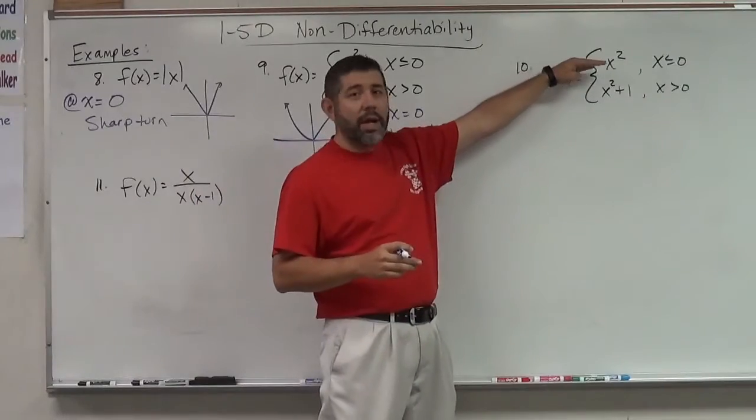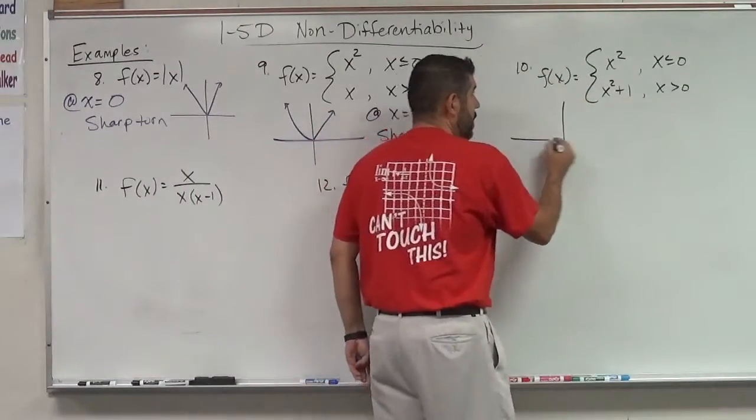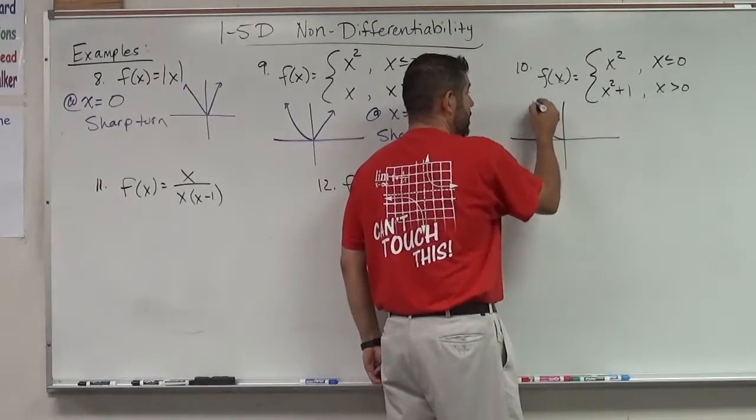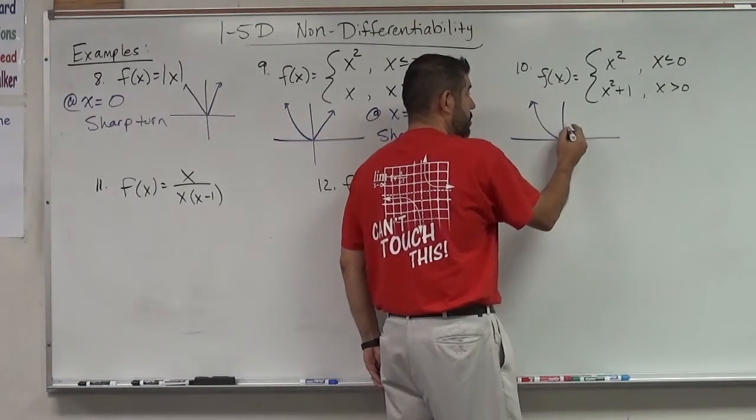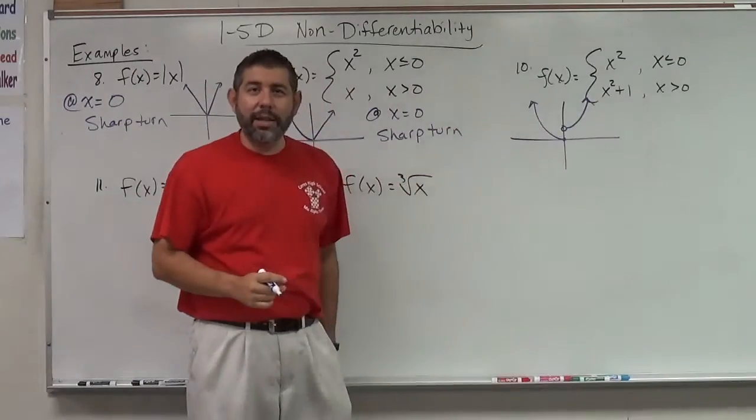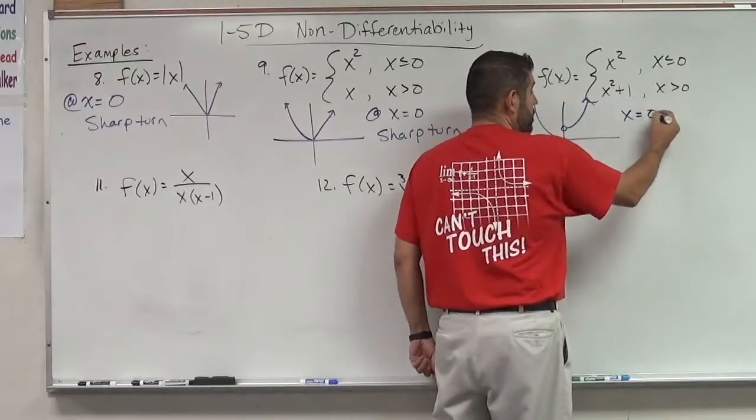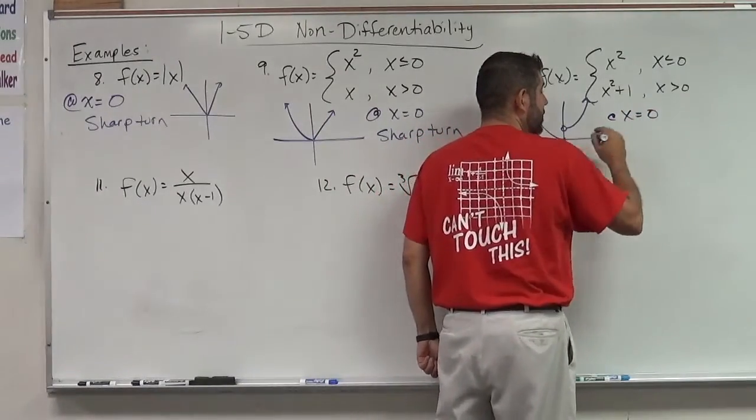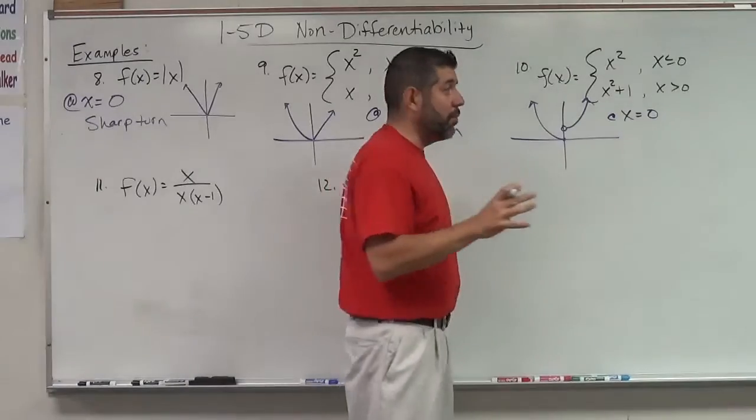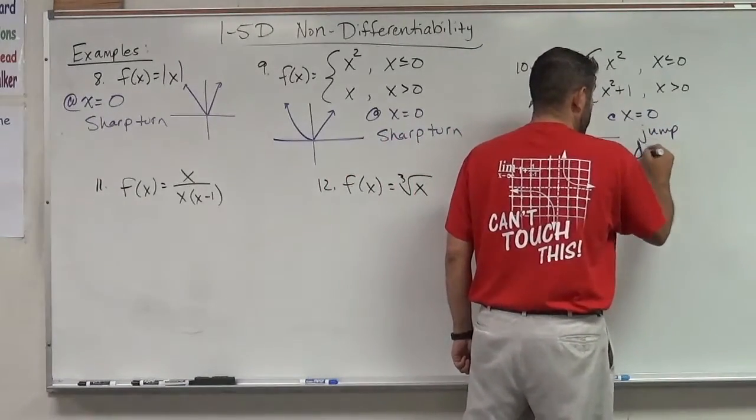Okay, what about number 10? We've got x squared and x squared plus 1. Well, if we graphed that one, x squared looks like this, and x squared plus 1 is a parabola shifted up 1. And what do we got there? We have a jump discontinuity at x equals 0. So at x equals 0, it's not differentiable because it's not continuous. We have a jump discontinuity.